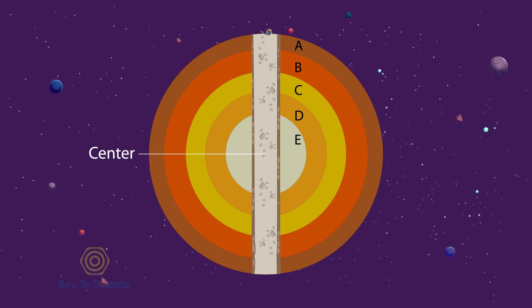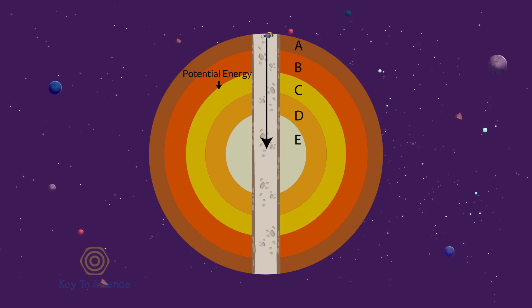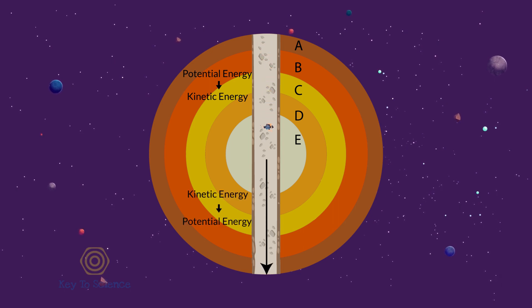Therefore, from one end to another end, we will reach the center with increasing velocity and will reach the other end with decreasing velocity. Here, from the beginning to the center, the potential energy of us will be converted to kinetic energy. And then again from the center to the other end, the kinetic energy will decrease, which will be converted to potential energy again.